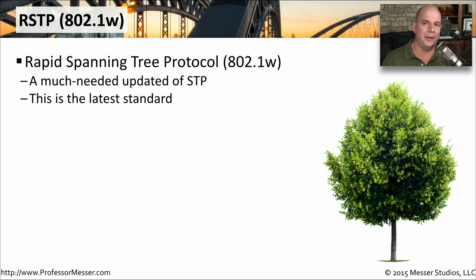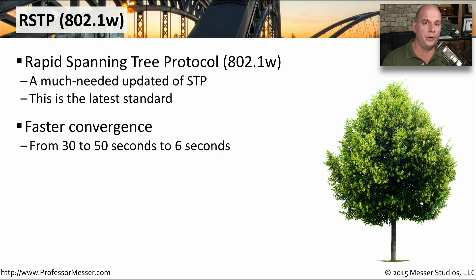Spanning tree was great when it came out in 1990, but there have been a number of changes to networking and a number of changes to spanning tree through the years. The latest version of spanning tree is RSTP — this is 802.1W, called Rapid Spanning Tree Protocol. It's called rapid because the convergence time for spanning tree can generally take somewhere between 30 to 50 seconds. So if there's an outage, your network connectivity may be affected for a very long period of time. With Rapid Spanning Tree Protocol, we can decrease that down to a six second time frame.